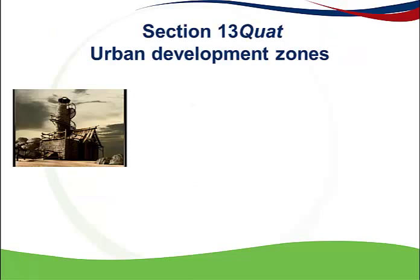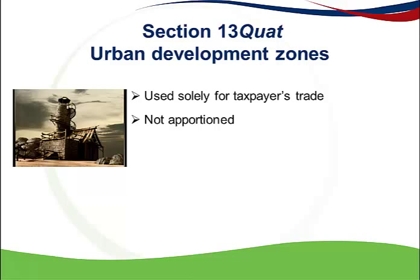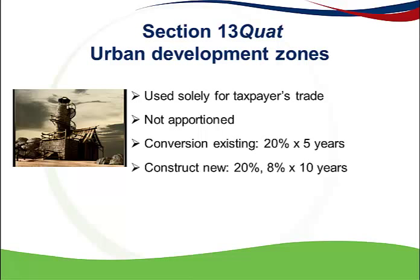The last allowance is the section 13 Quad allowance on a building situated in an urban development zone. This allowance must be used solely for the taxpayer's trade and is not apportioned. The percentage depends on how the building was dealt with by the taxpayer. If the taxpayer converted or refurbished an existing building where the existing structure is preserved, then the allowance is claimed at 20% of the cost per year for 5 years. If the taxpayer constructed a new building or added an extension, then 20% of the cost is claimed in the first year and 8% for the following 10 years.